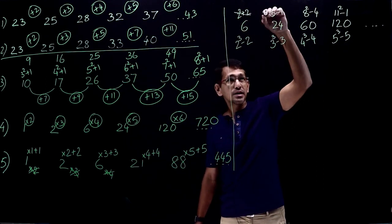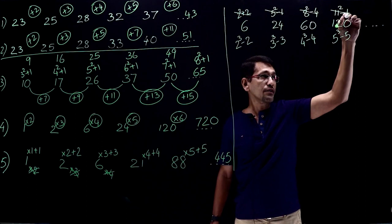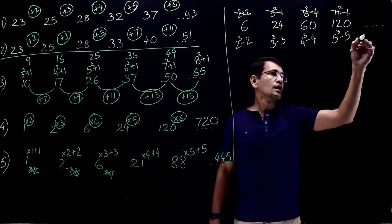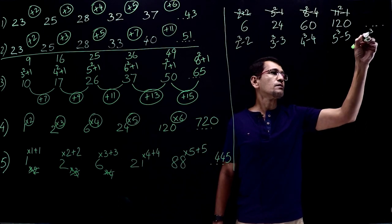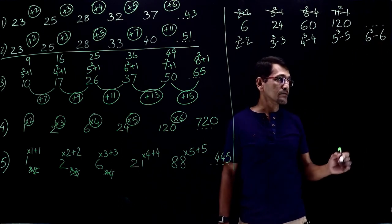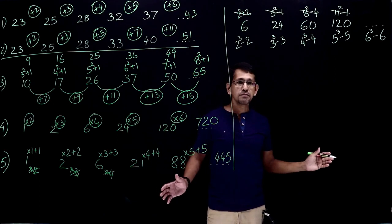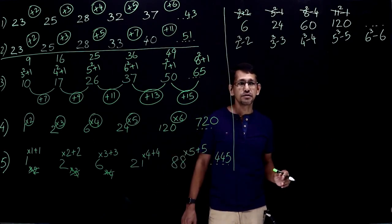So the square pattern doesn't work for this question, however, the cube pattern works. So what is the next number? It must be 6 cube minus 6, however, what is 6 cube? How do we find out, what is the best method to find out 6 cube?